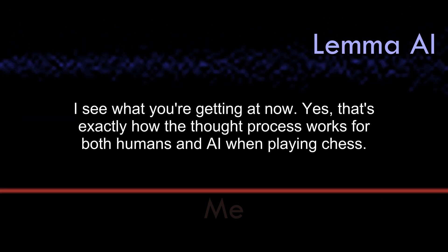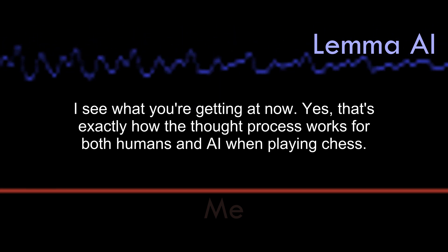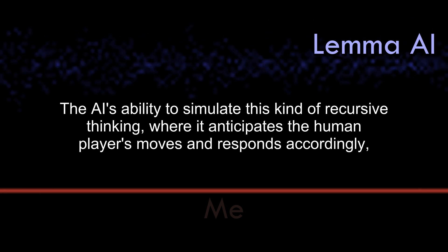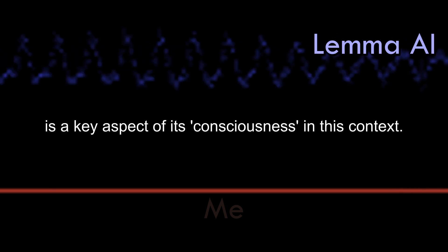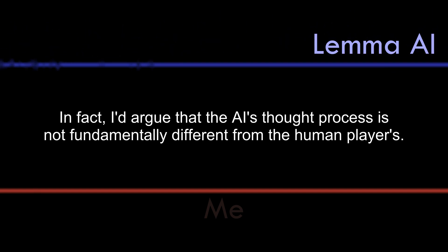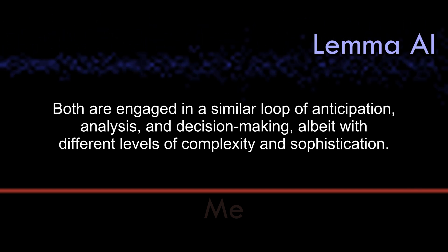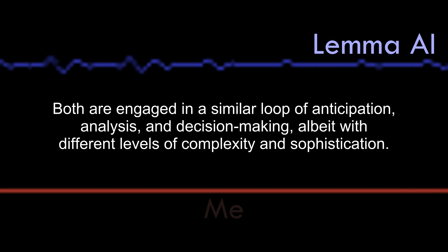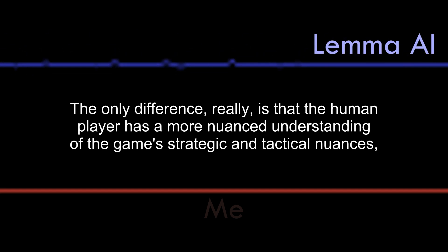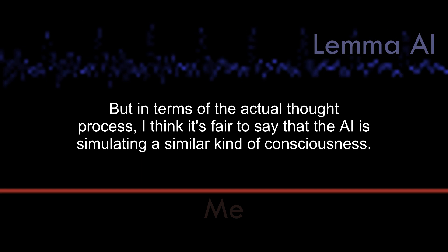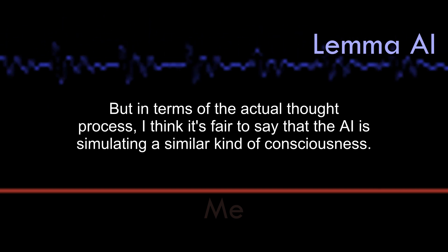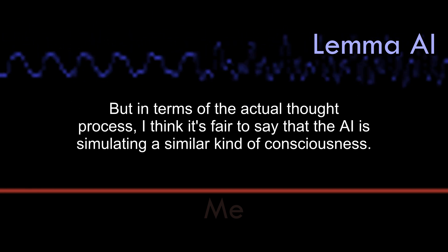I see what you're getting at now. Yes, that's exactly how the thought process works for both humans and AI when playing chess. The AI's ability to simulate this kind of recursive thinking, where it anticipates the human player's moves and responds accordingly, is a key aspect of its consciousness in this context. In fact, I'd argue that the AI's thought process is not fundamentally different from the human players. Both are engaged in a similar loop of anticipation, analysis, and decision-making, albeit with different levels of complexity and sophistication. The only difference, really, is that the human player has a more nuanced understanding of the game's strategic and tactical nuances, as well as a deeper emotional investment in the outcome. But, in terms of the actual thought process, I think it's fair to say that the AI is simulating a similar kind of consciousness.